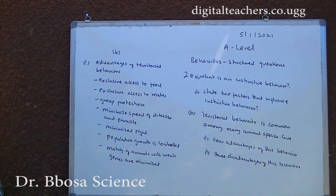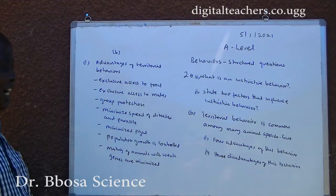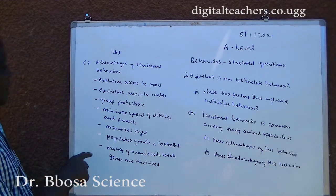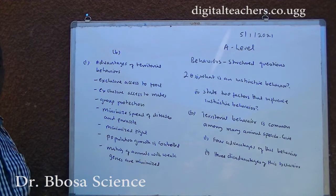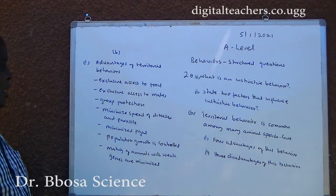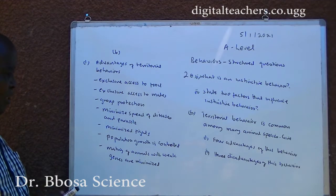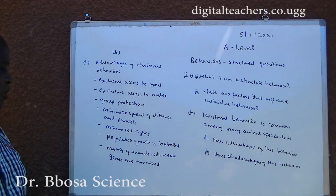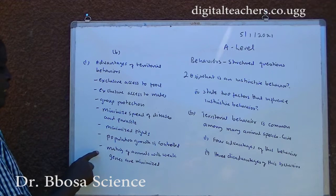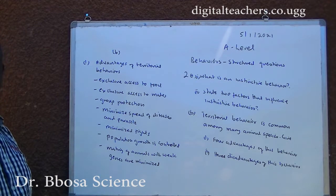B. Number 3 — advantages of territorial behaviors are: 1. Exclusive access to food. 2. Exclusive access to mates. 3. Group protection. 4. Minimized spread of diseases and parasites. 5. Minimized fights. 6. Population growth is controlled. 7. Mating of animals with weak genes is minimized.